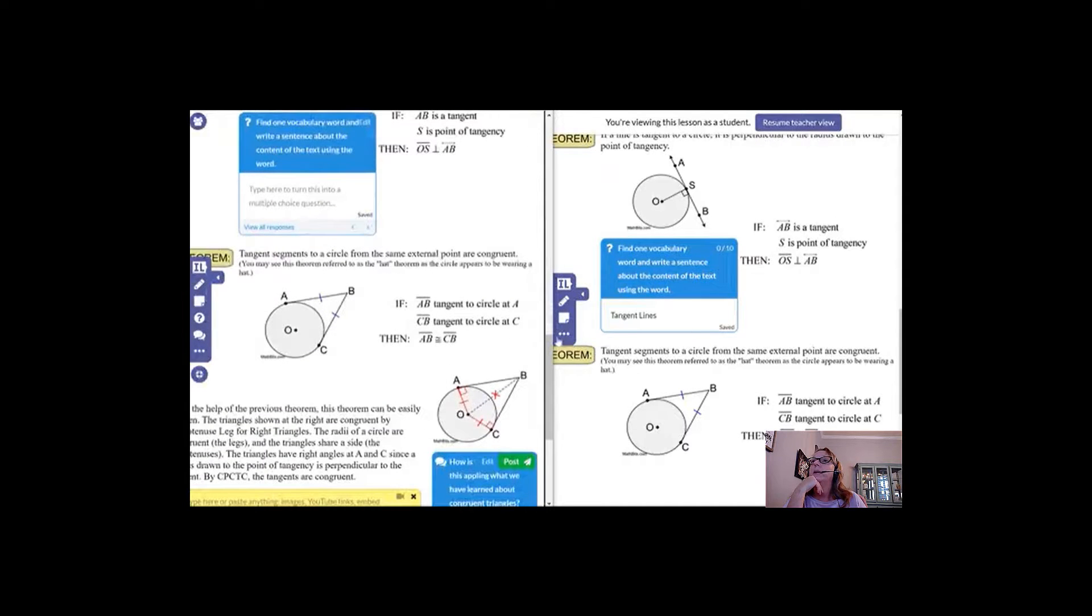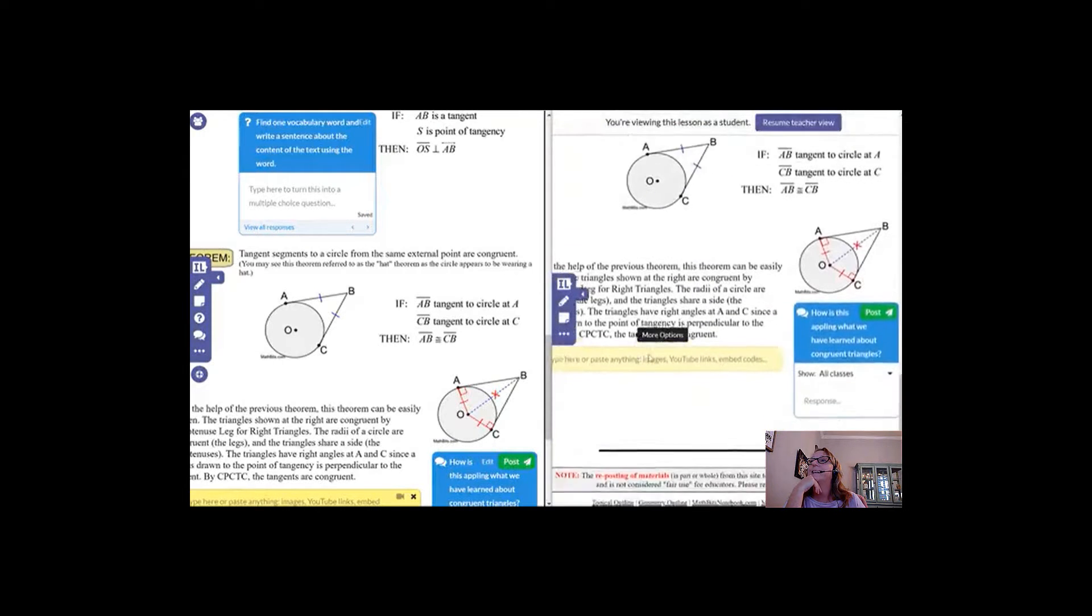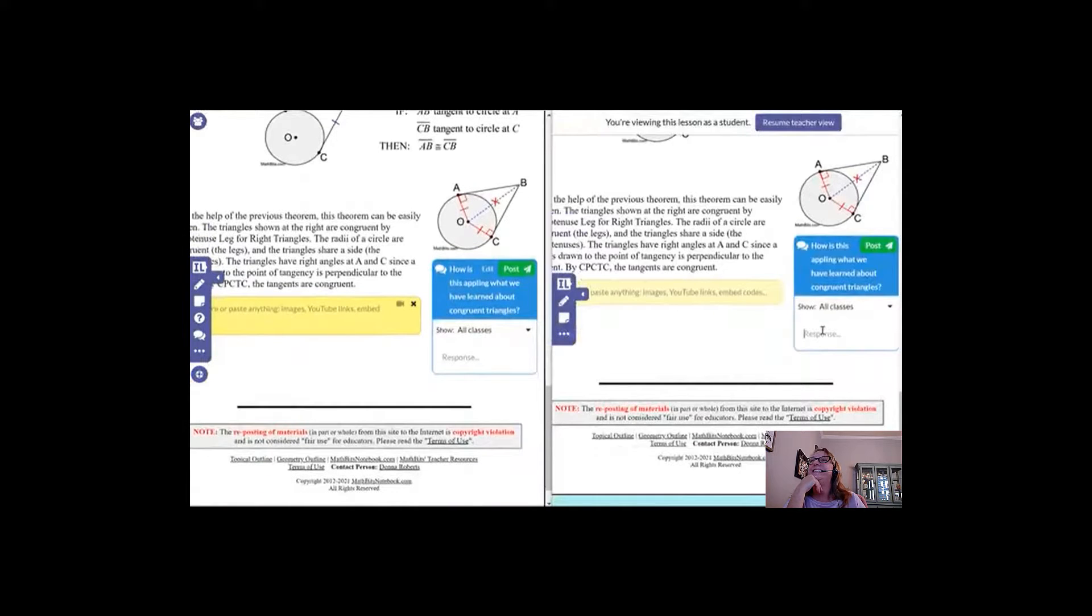Then at the very bottom, sorry I must have clicked on that by accident. At the very bottom you can see the discussion post. Same thing here. The student types in their response and then they'll post it and I'll be able to see as well as everybody else will be able to see. I'll also be able to see who responded how.